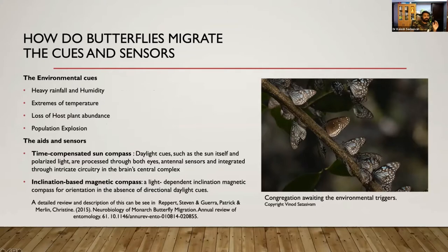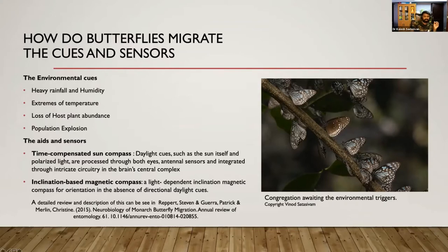What are the cues and sensors that determine migration? Basically it is in-built in the genes and triggered by the environment — heavy rainfall, humidity, extremes of temperature, loss of host plant abundance, and generally population explosion. How do they migrate? Researchers have found two systems: one called the time-compensated sun compass, and the other the inclination-based magnetic compass. Daylight cues such as the sun or polarized light are sensed by the eyes and integrated in neural circuits. The inclination-based magnetic compass is also useful even in the dark.